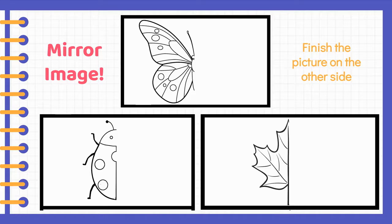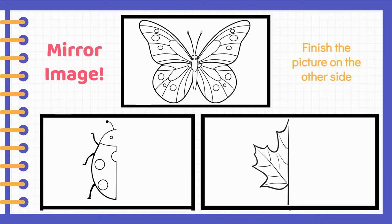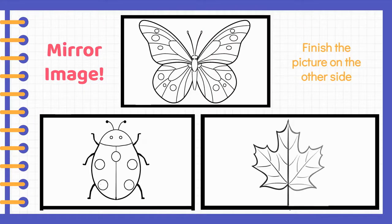We're back and we'll be going over the drawings now. This is what we got for the butterfly, this is what we got for the ladybug, and this is what we got for the leaf.